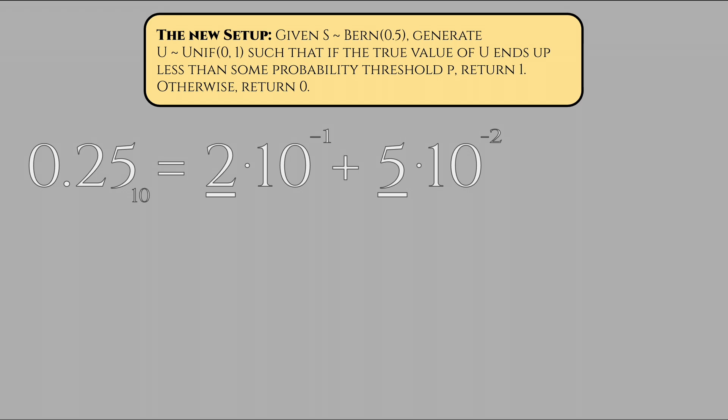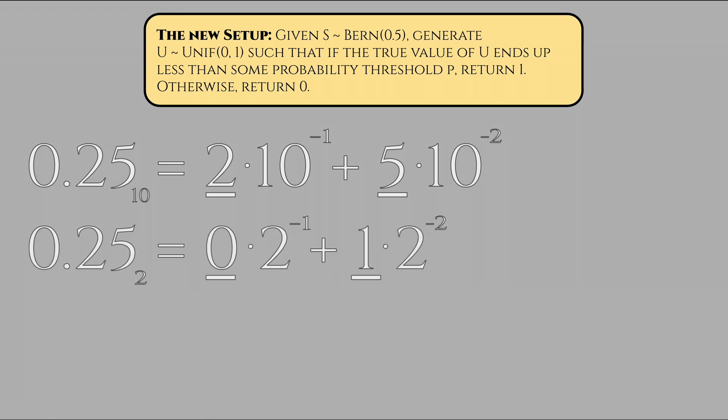Well, we can write out what the definition of base 10 means. Suppose we have the decimal value of 0.25. In base 10, this is equal to 2 times 10 to the power of negative 1 plus 5 times 10 to the power of negative 2. Simple enough. Then, to represent 0.25 in binary form, we can observe that its fractional form is 1 fourth, or 2 to the power of negative 2. Thus, 0.25's binary form is actually 0.01.